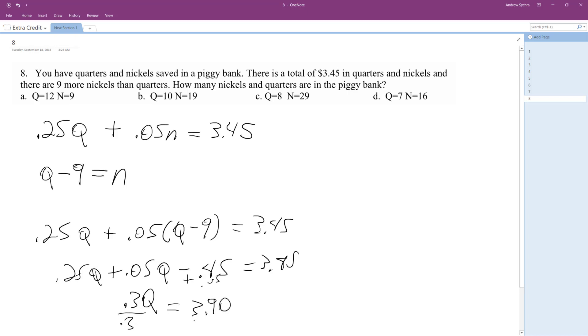Divide by 0.3. Q is going to equal—let me look—3.9 divided by 0.3. Is that like 10 or something?